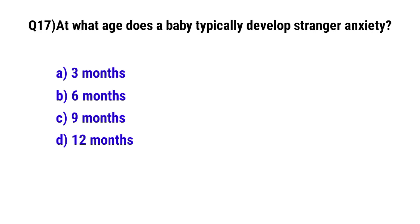Question No. 17. At what age does a baby typically develop stranger anxiety? The correct option is C. 9 months.